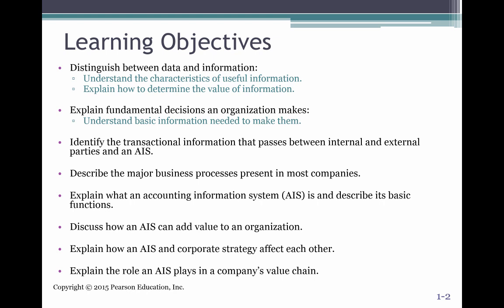Here are all of our learning objectives. Some of the ones you should focus on to prepare for your final exam are the difference between data and information — we want to know those characteristics and how to determine value. Also, explain the decisions an organization makes, and understand basic information used for decision-making. We'll talk about transactions between all stakeholders, internal and external, and discuss several major business processes and how the AIS actually processes those transactions. Most importantly, what AIS can add in terms of value — what it can contribute to the strategy and the value chain.